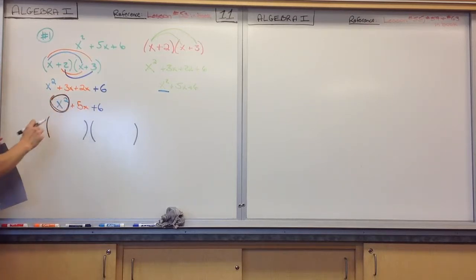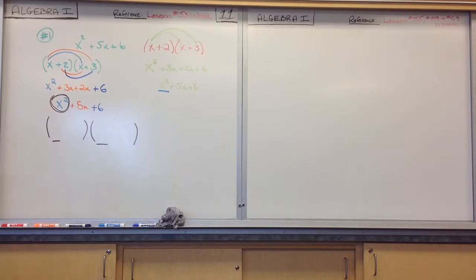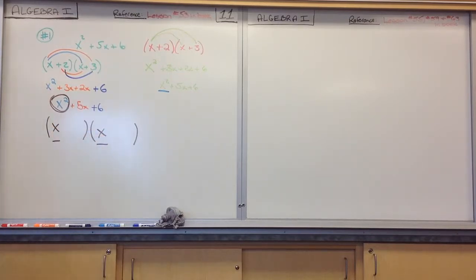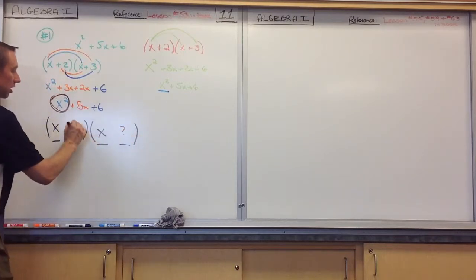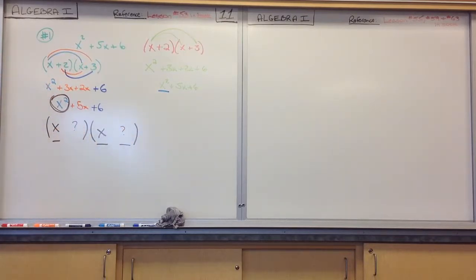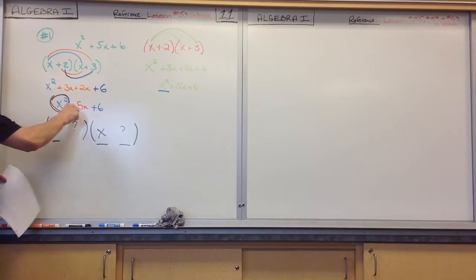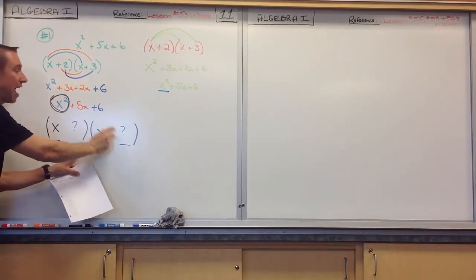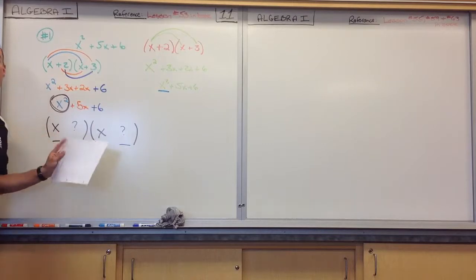We first need to look at this. What created this — what times what? This position times this position in FOIL. What times what will give me X squared? Two X's. So we put the X's into place. Now if we're able to figure out what goes in the remaining spots, I'm done. So I now need to go and look at the last term. The last term — because if I can figure out the factors of this, one goes here and one goes there, and I'm done with the process.